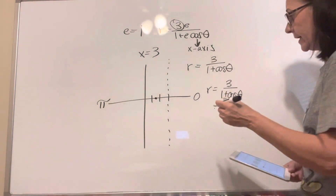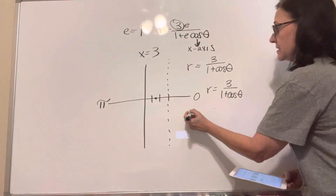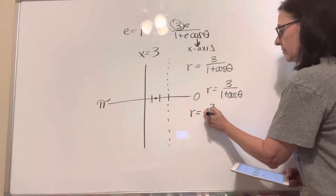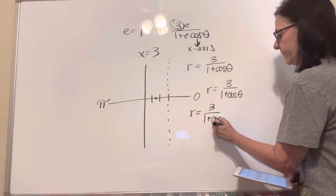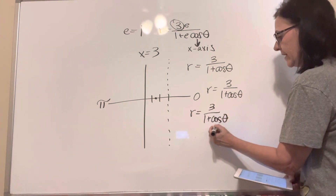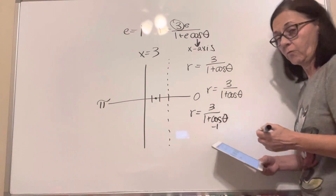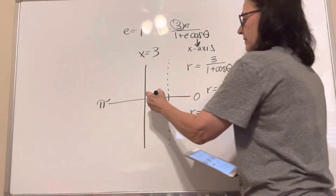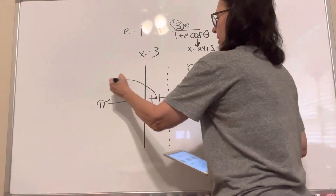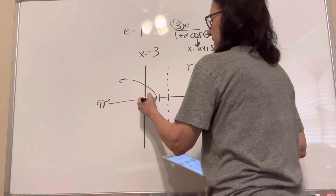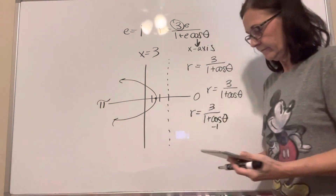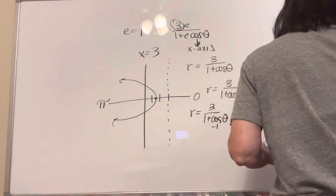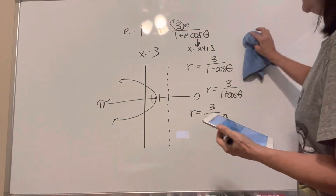We'll show you how pi doesn't make sense, because it's r equals 3 over 1 plus cosine of pi. That's negative 1, so it's undefined. So we know it opens in this direction.